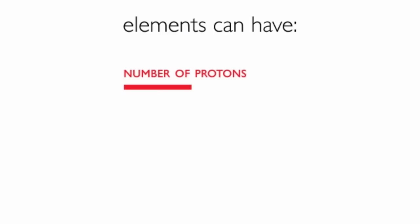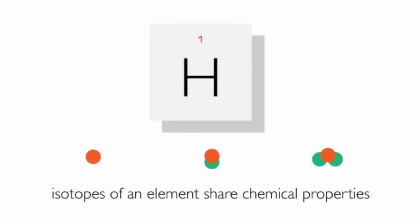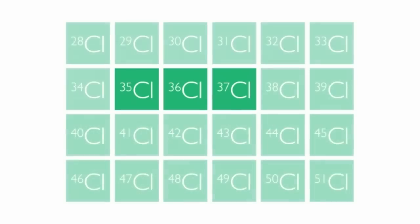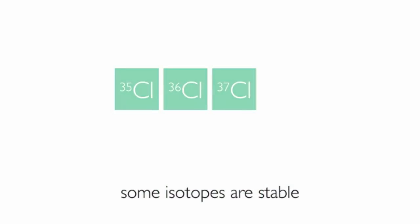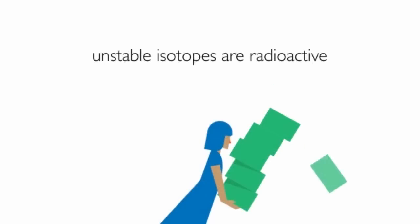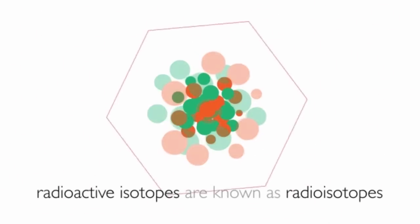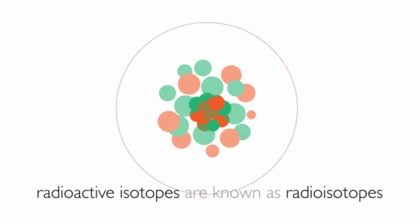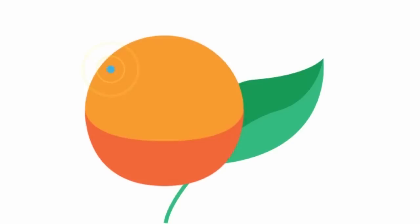So as you can see, isotopes are important in modern science and so we'll finish with a summary of the key points. Isotopes of the same element have the same chemical properties. Some isotopes are stable. Isotopes that are unstable are radioactive. Radioactive isotopes are also known as radioisotopes. Isotopes can be used as tracers or markers in chemistry and medicine, and they are also used to kill cancer cells.